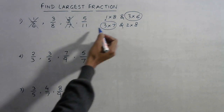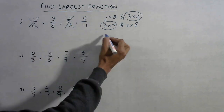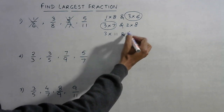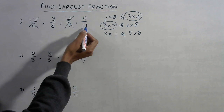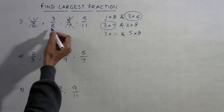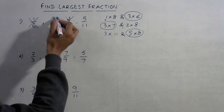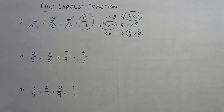We retain 3/8 again. Now compare 3/8 and 5/11: 3 into 11 is 33, and 5 into 8 is 40. Since 33 is smaller and 40 is larger, we retain the numerator 5 and discard 3/8. So the largest fraction is 5/11.